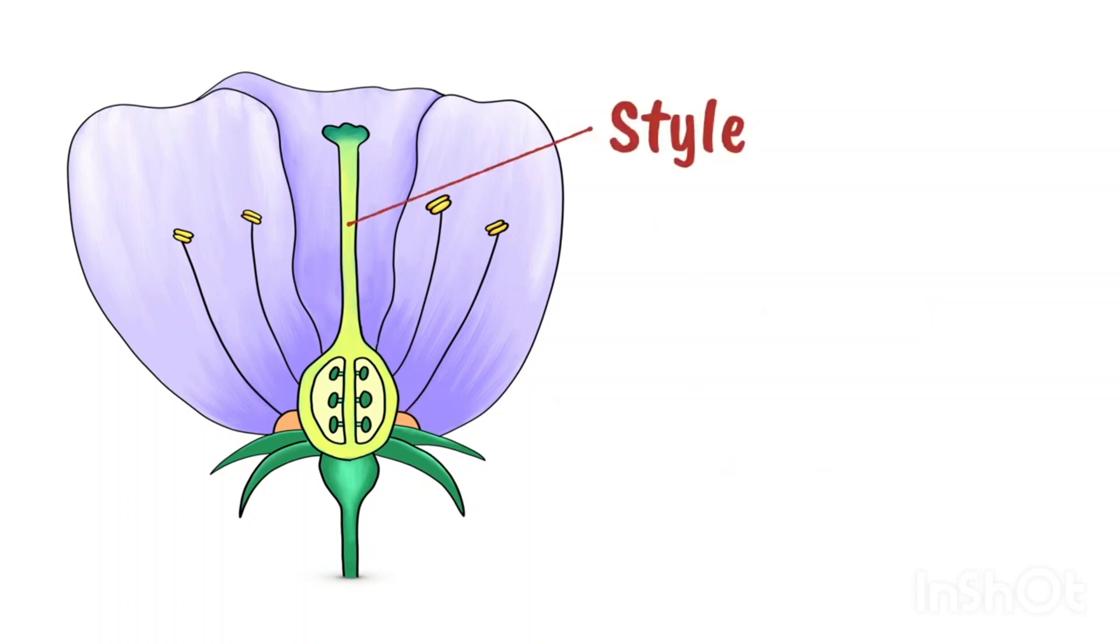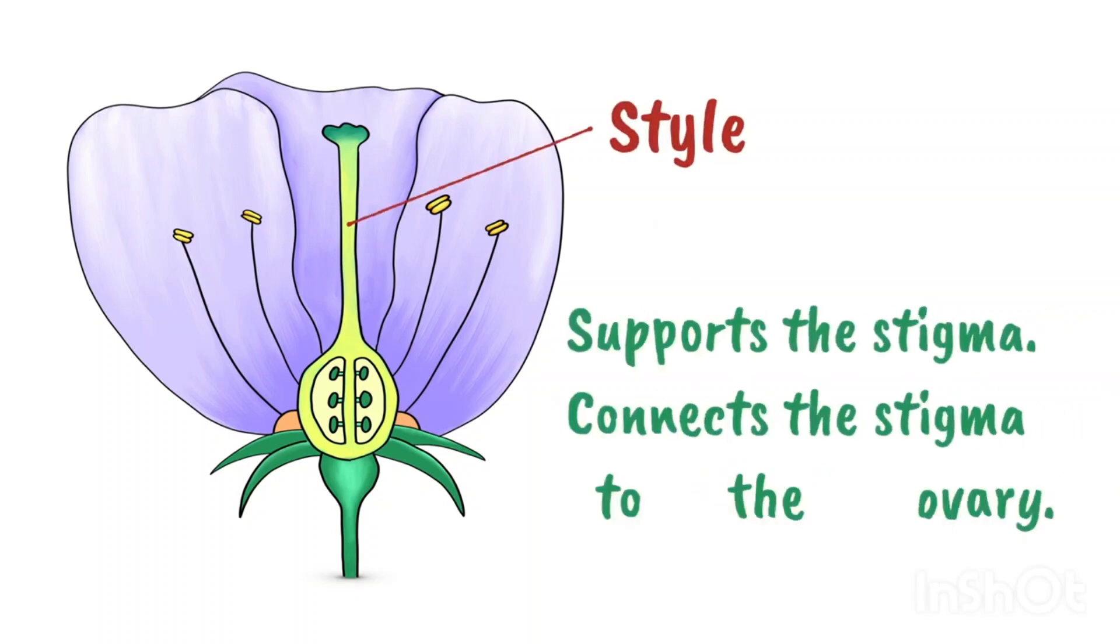This long structure is called the style and its job is to support the stigma and to connect the stigma to the ovary.